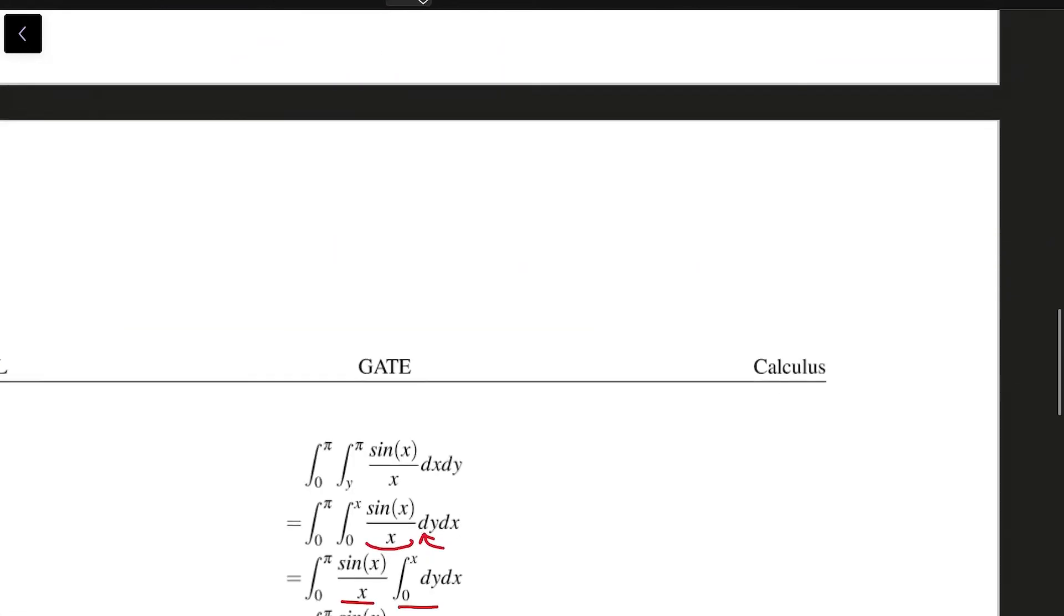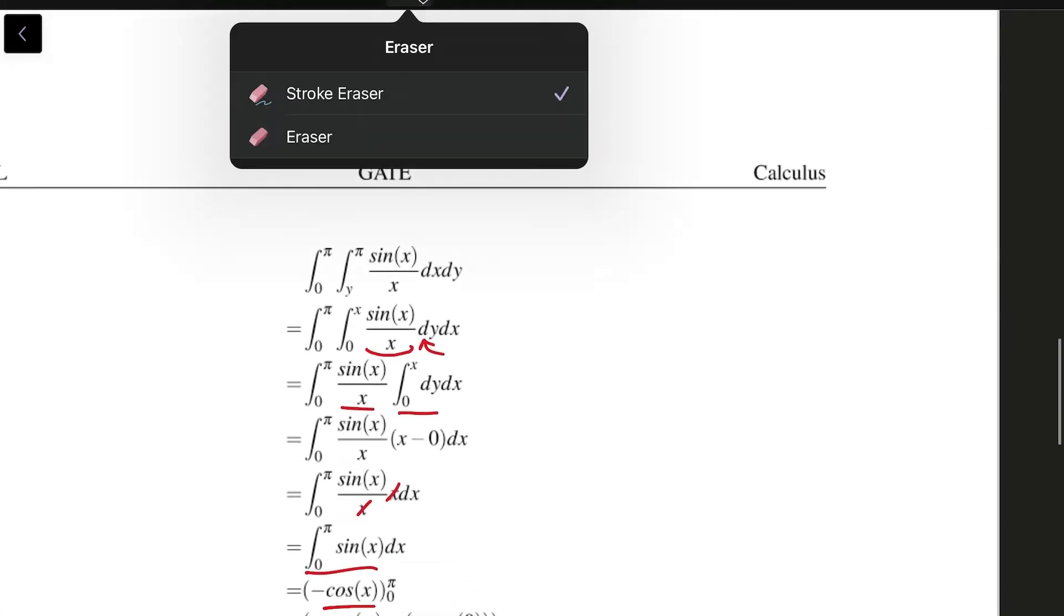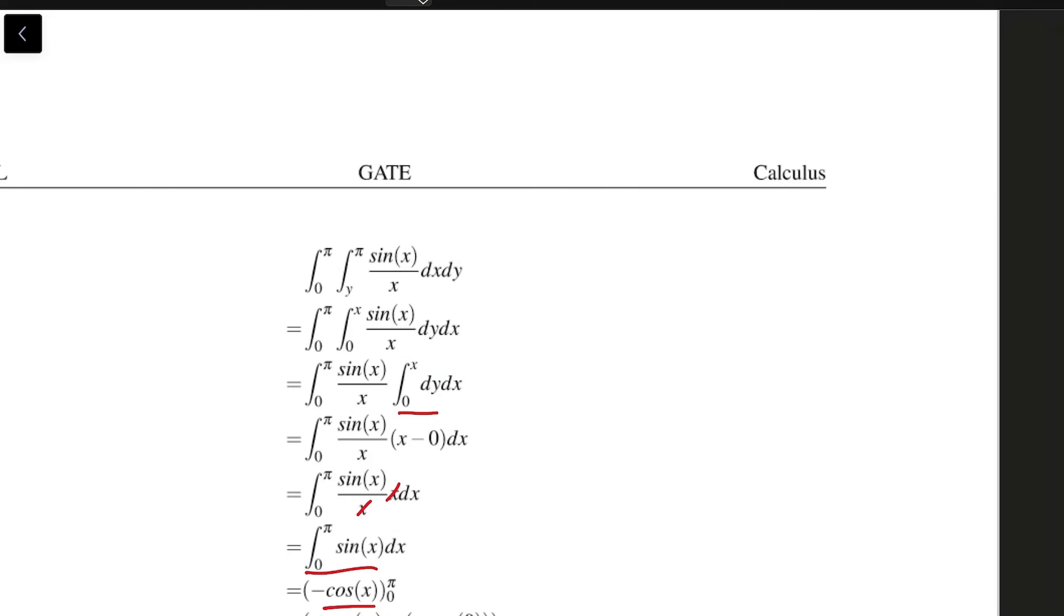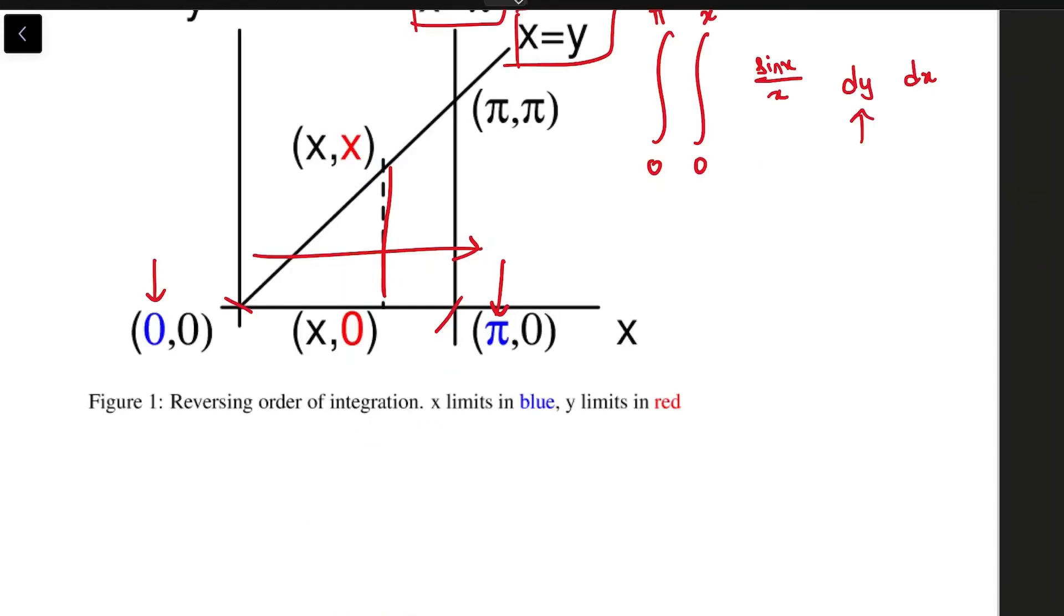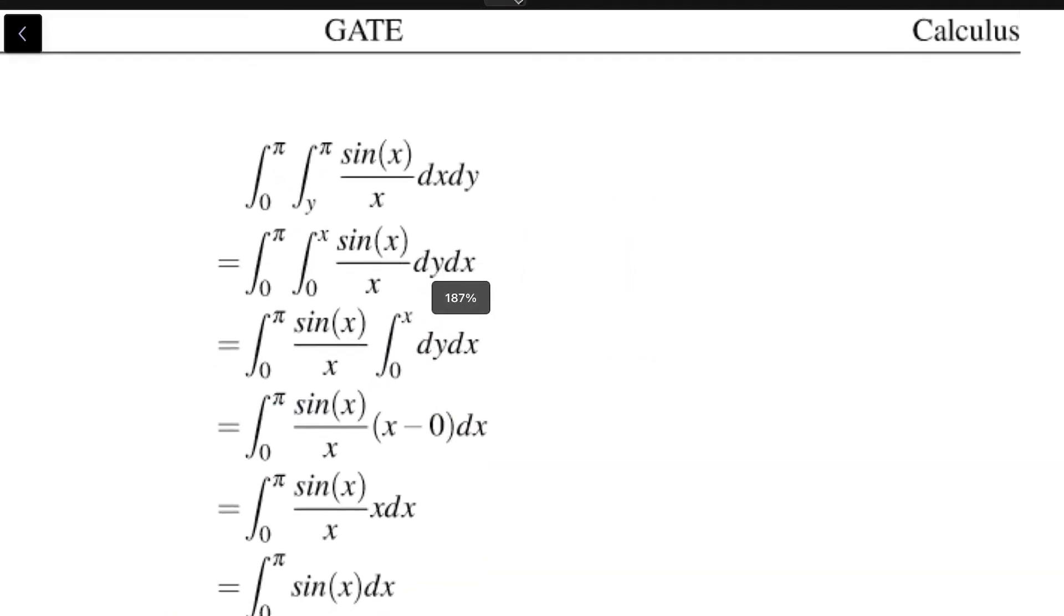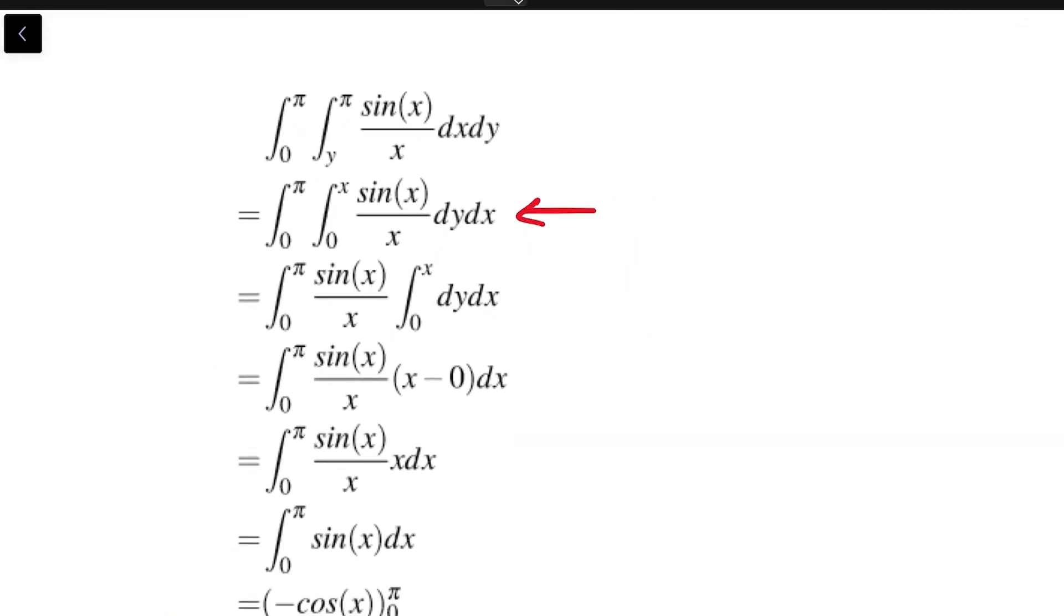That is what we have shown here. You can see that the original integral is here, and then this is the integral with the variables changed—the limits changed to 0 to x and 0 to π.